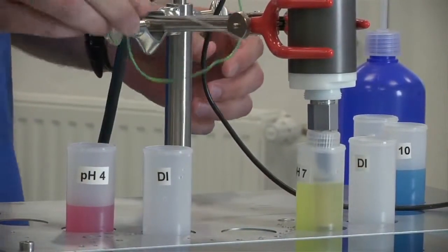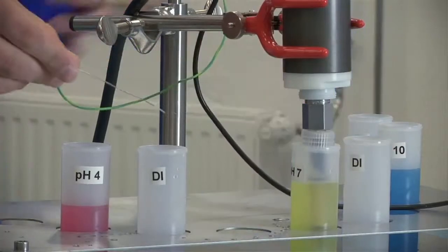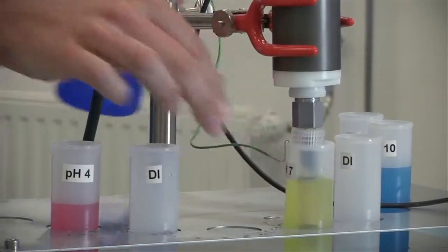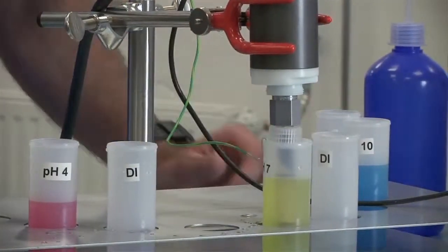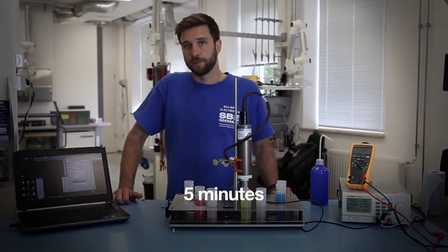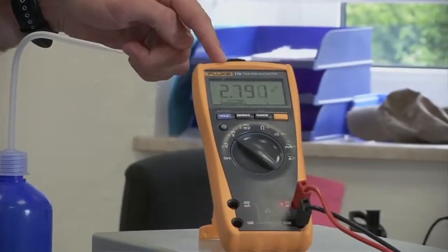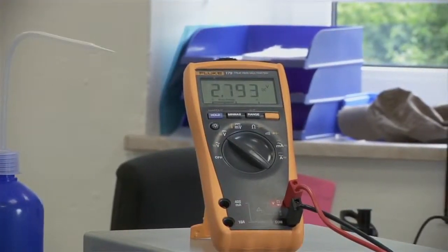And again use the ground strap in the next solution as well. So then again we'll wait a few minutes for it to stabilize and record the voltage out for the pH of 7. In this case 2.797.